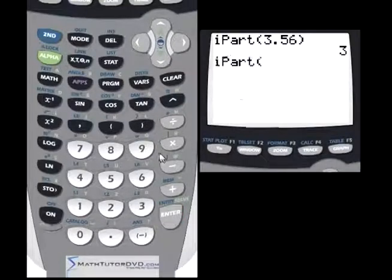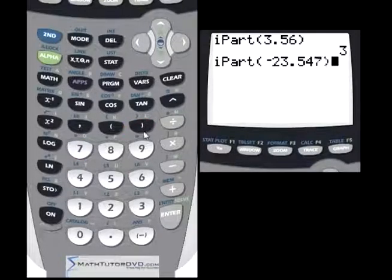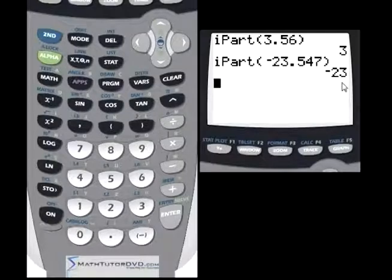If you're going to look at negative 23.547, you put that number in to return the integer part, then it's going to return negative 23, because that's the part that's in front of the decimal. So it's just going to return that. It's not rounding. It's not doing anything else.